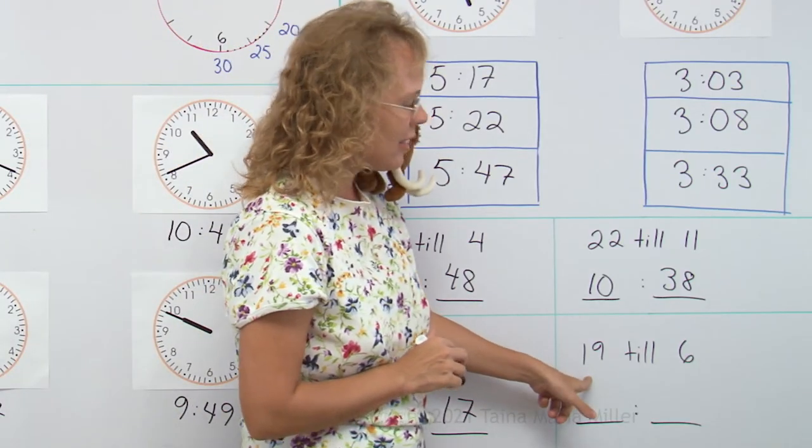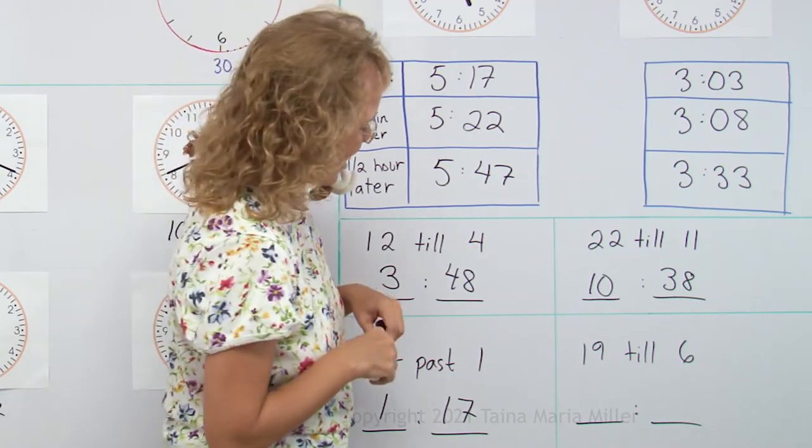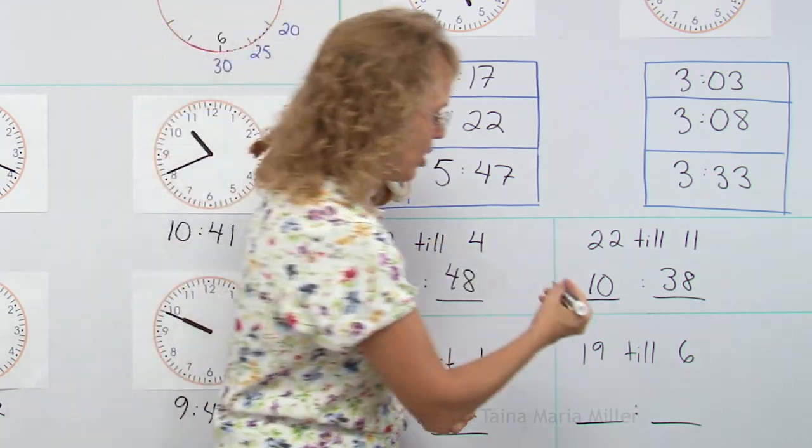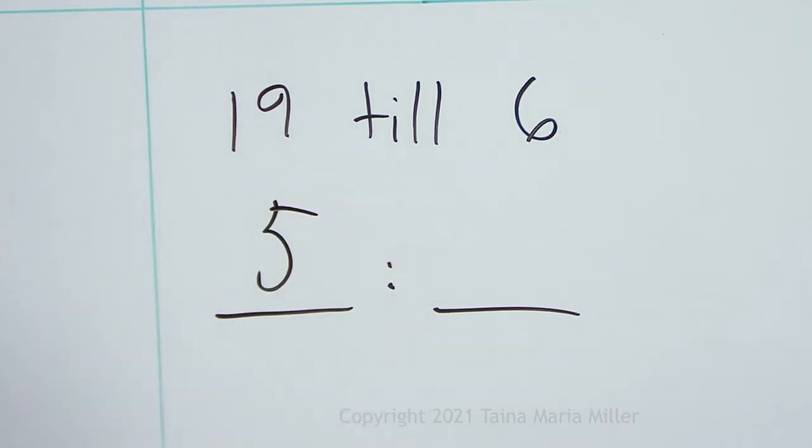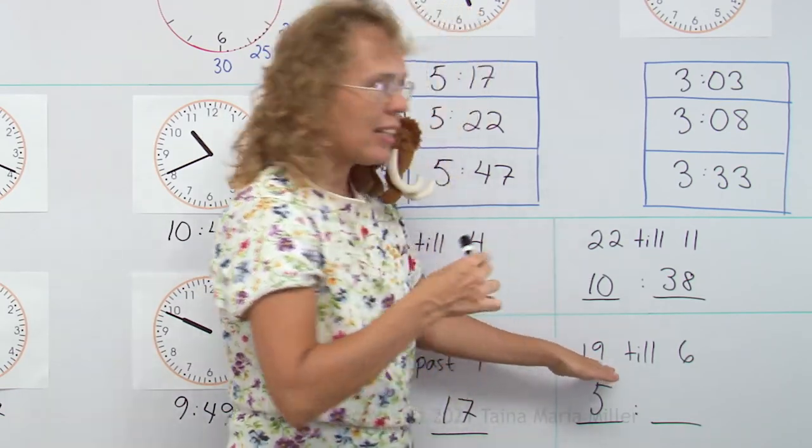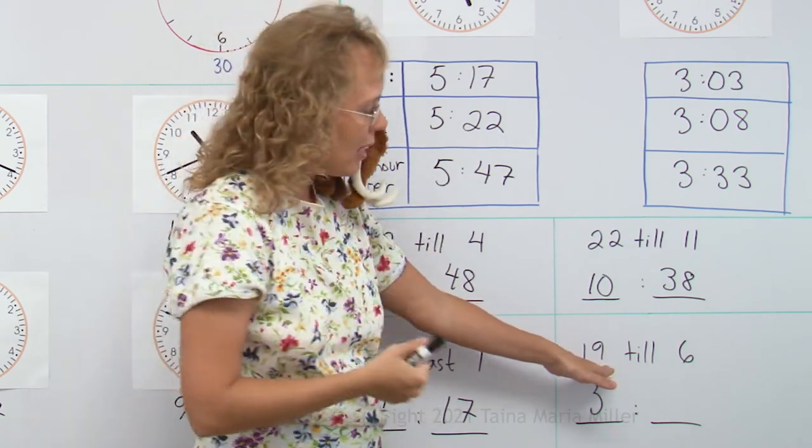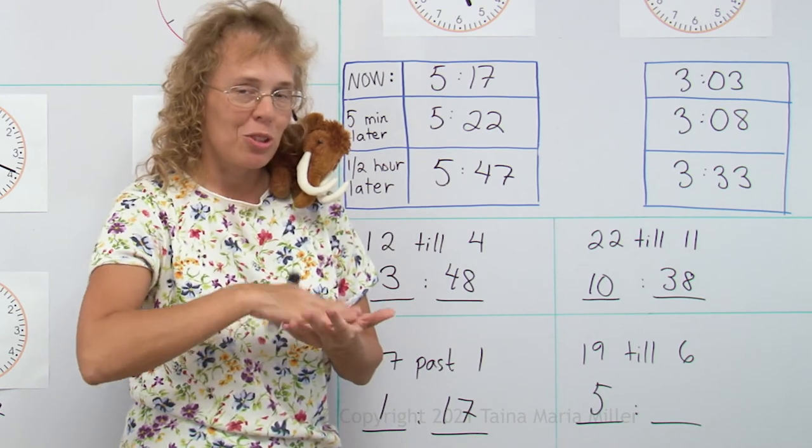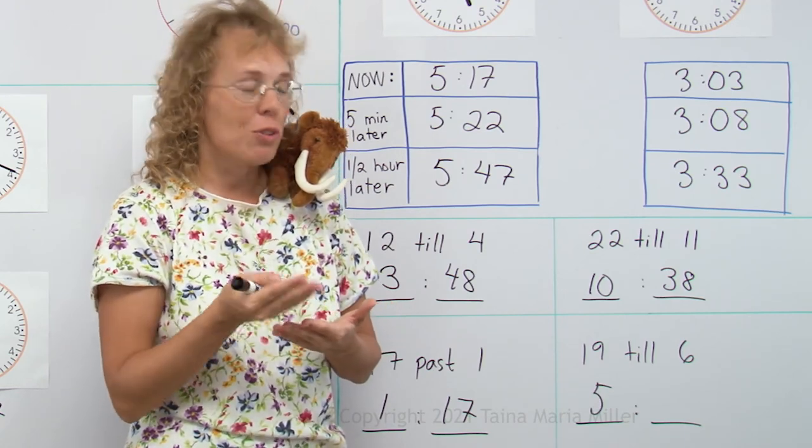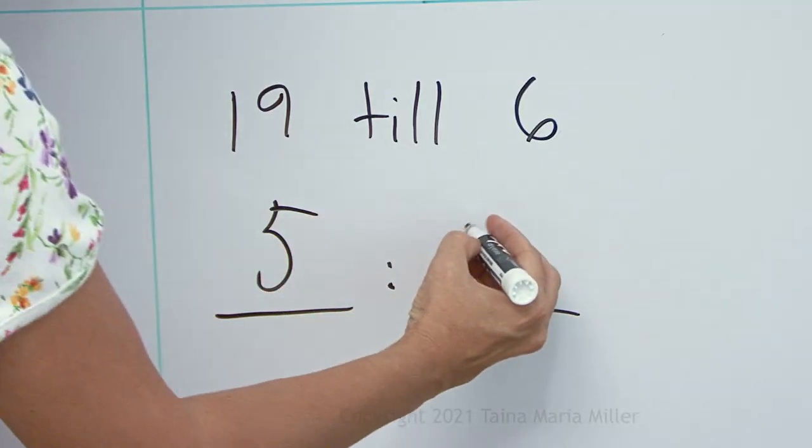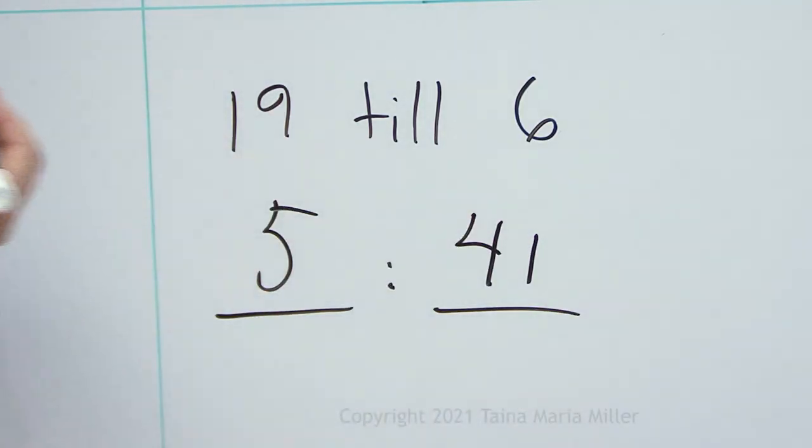Lastly 19 till 6, one more of those till thingies, till 6 hours. It's not yet 6 hours, so we write 5 here, 5 hours. And then let me subtract, it's 19 minutes lacking from the full 60 minutes, so 60 minus 19, it's almost 60 minus 20. That would be 40. But since it was just 19, then I have to add one minute to that, or get 41 minutes.